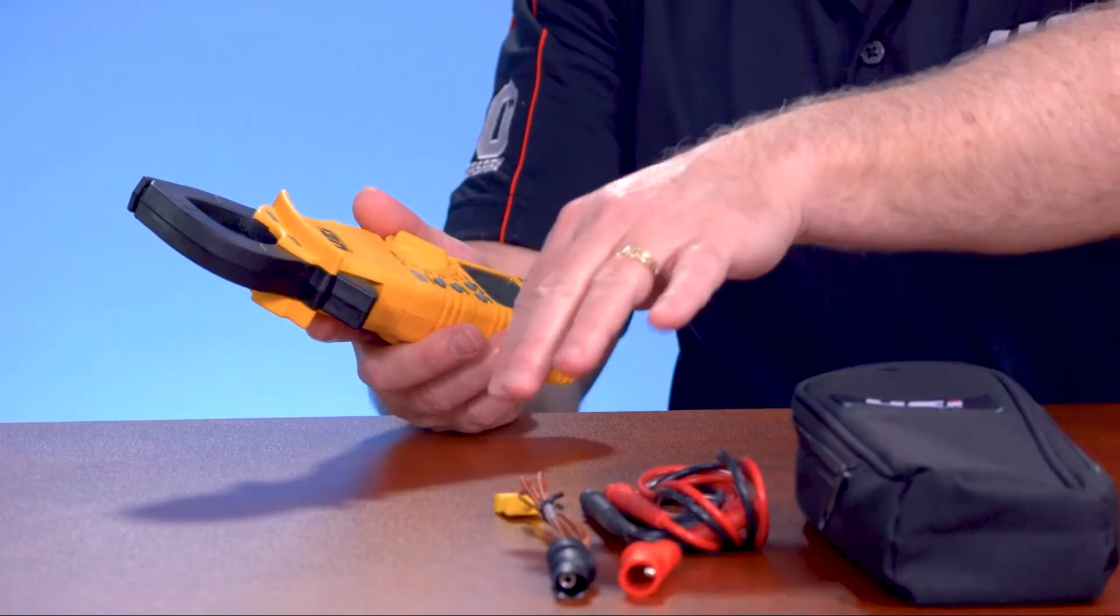So as far as accessories, of course you've got test leads, alligator clips, and for temperature, you've got a K-type thermocouple probe. Now this is just a standard K-type input. So if you've got a pipe clamp with a K-type end on it, which we offer separately or other manufacturers, any K-type probe will work with this instrument.